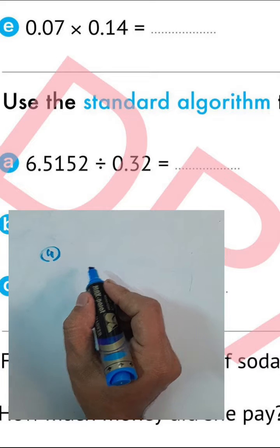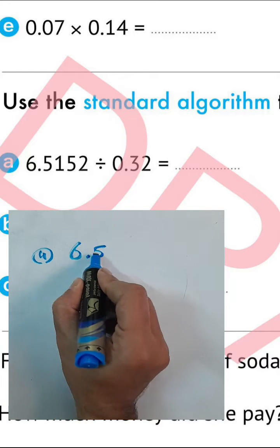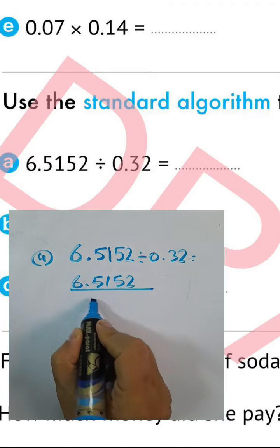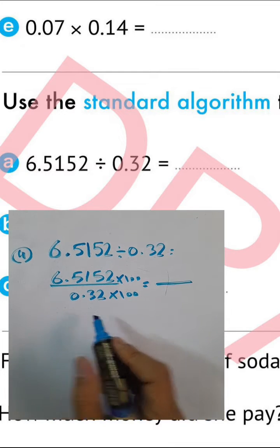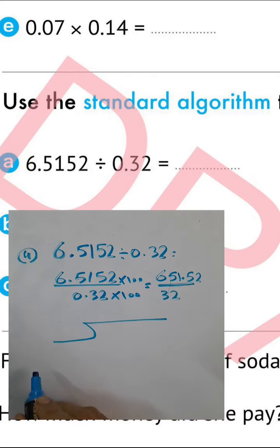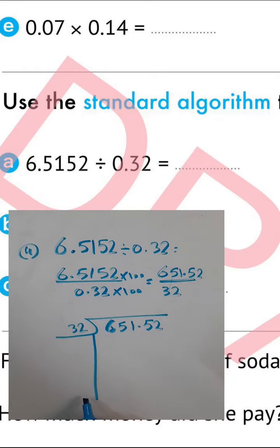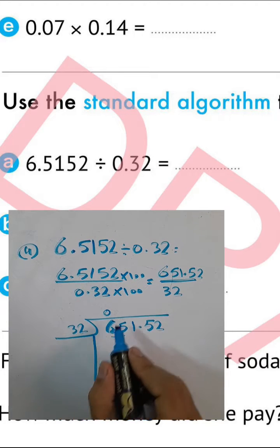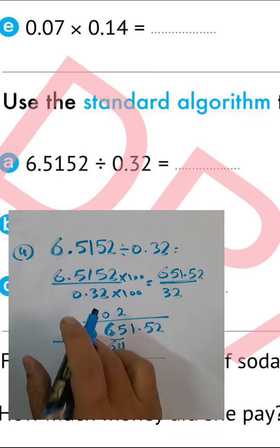Question number two: use standard algorithm to find the result. First step, letter E: convert the divisor from decimal to whole number by multiplying by 100, because the point is after two places. We have 6.5152 divided by 0.32. Write 6.5152 over 0.32, multiply by 100: result is 32 in the denominator and 651.52 in the numerator. Using long division: 65 divided by 32 equals 2. Two times 32 equals 64; 65 minus 64 equals 1.